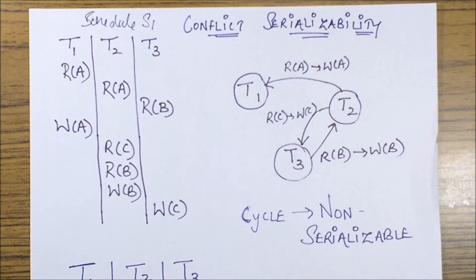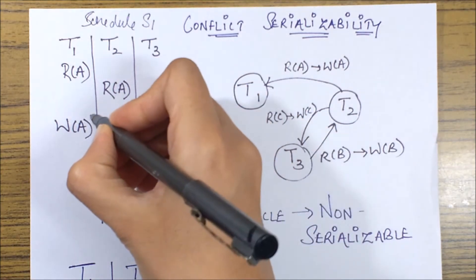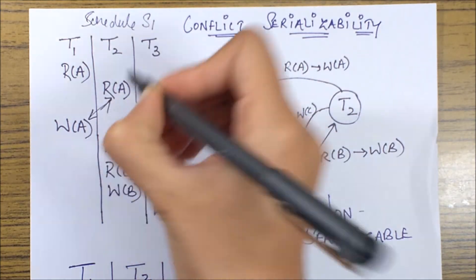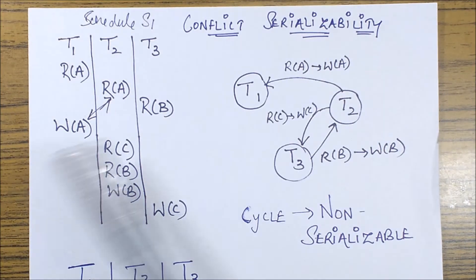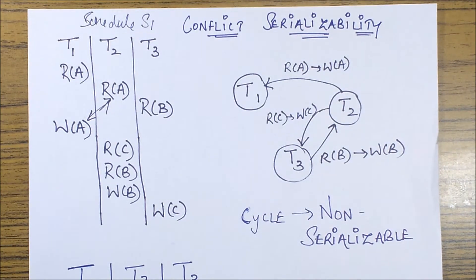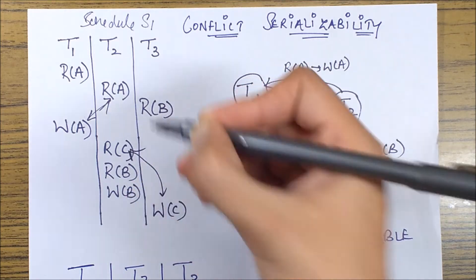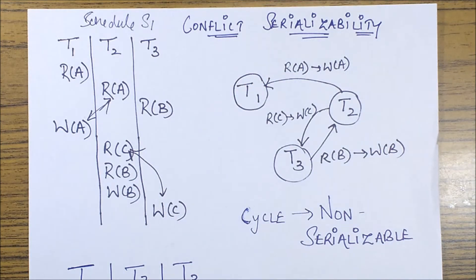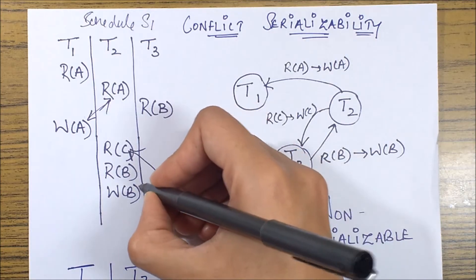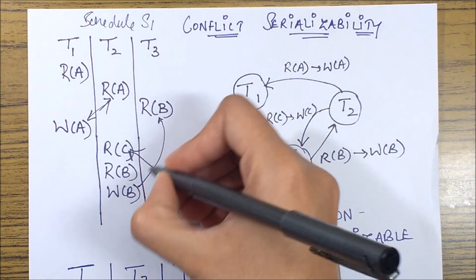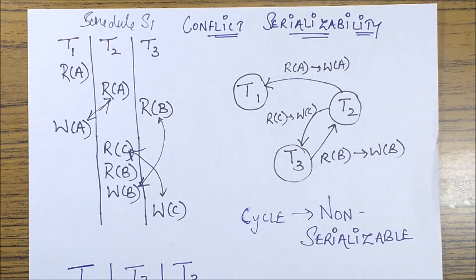So if I see the conflict pairs from the schedule I know that this is a conflict pair because it is a read-write and that too happening in two different transactions, then there is another conflict pair over here and is there any other conflict pair? Yes there is another conflict pair over here. So we basically have three conflict pairs and we are going to mark them.